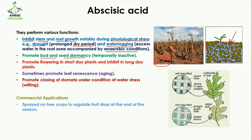Abscisic acid promotes flowering in short day plants, which are present in winter, and it inhibits or stops flowering in long day plants, which grow in summer.